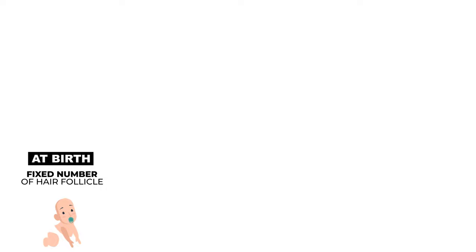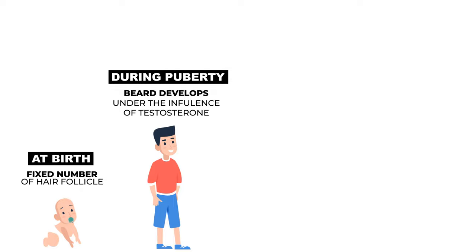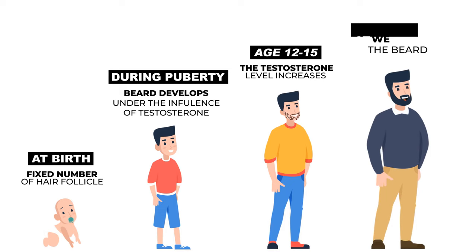First we have to understand how the beard develops. At the time of birth we are already given a fixed number of follicles in our beard area, which develop under the influence of testosterone at puberty — around 12 to 15 years of age. Testosterone levels increase, sexual development improves, and beard growth begins.